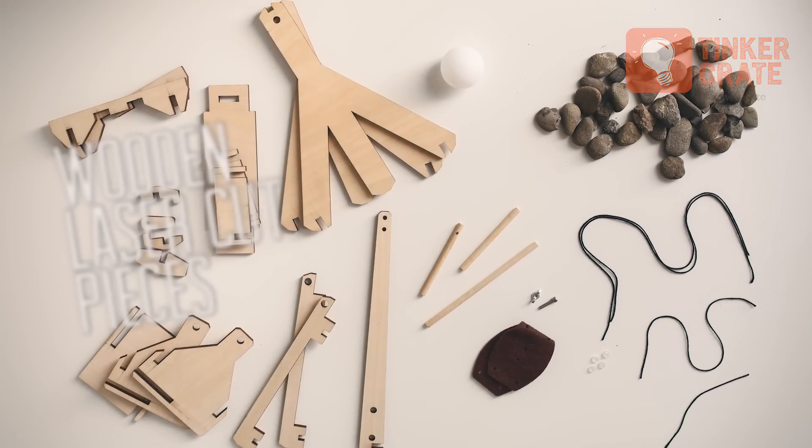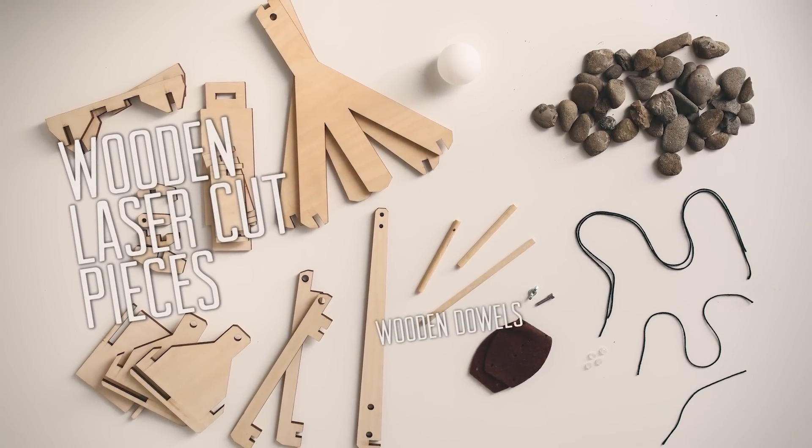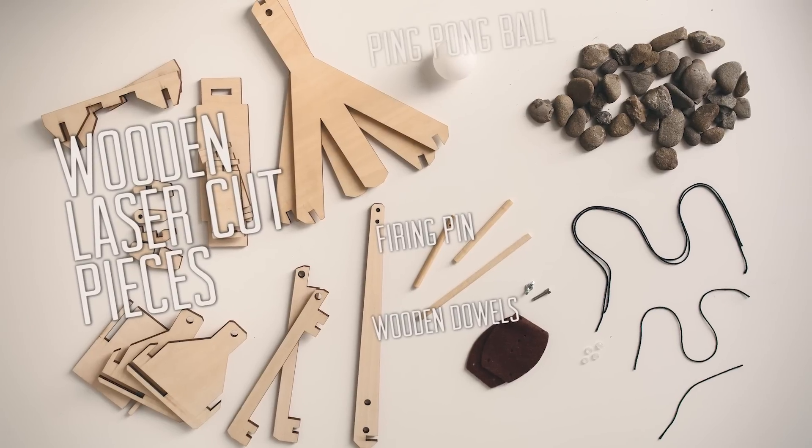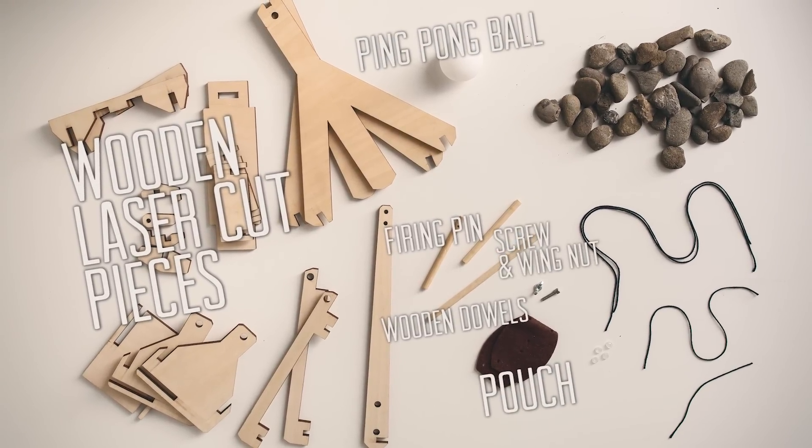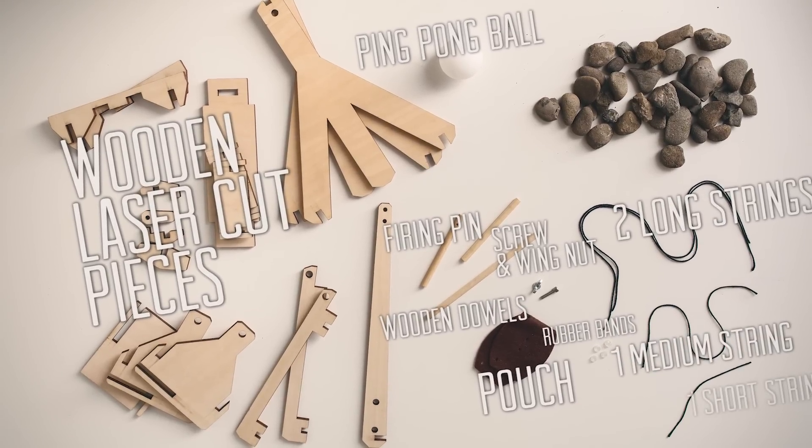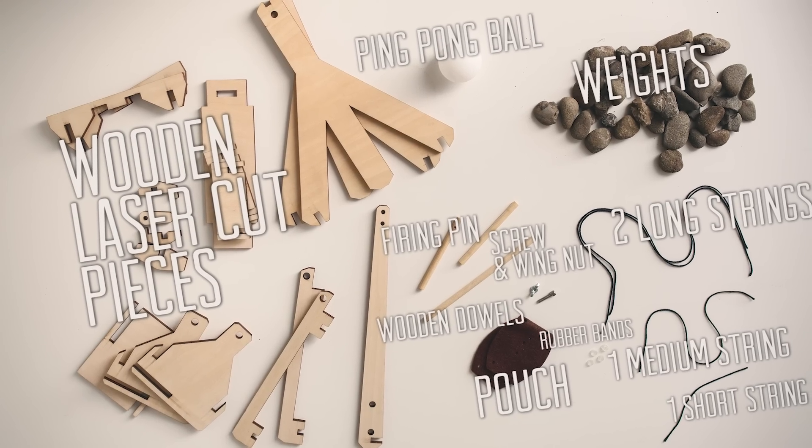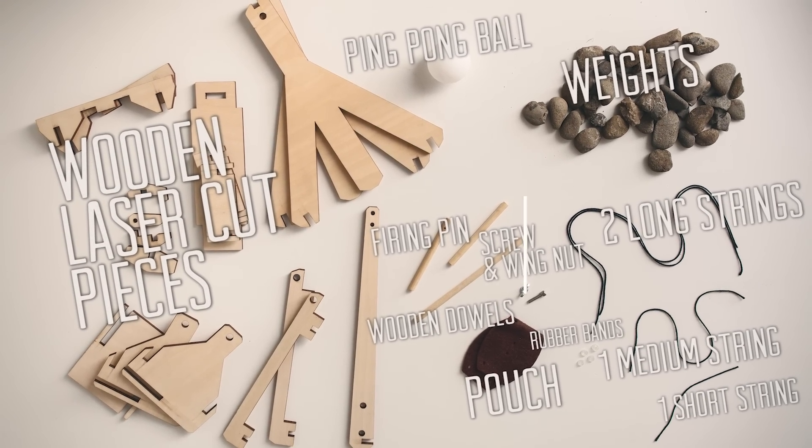Here's what comes in your Tinkercrate. You have a bunch of wooden laser-cut pieces to build the structure of your trebuchet, some wooden dowels and a firing pin, a ping pong ball, a pouch, screw and wing nut, rubber bands, two long strings, one medium string, one short string. Then you'll also from home need some weights. I have a bunch of rocks here but you can also use batteries or coins.